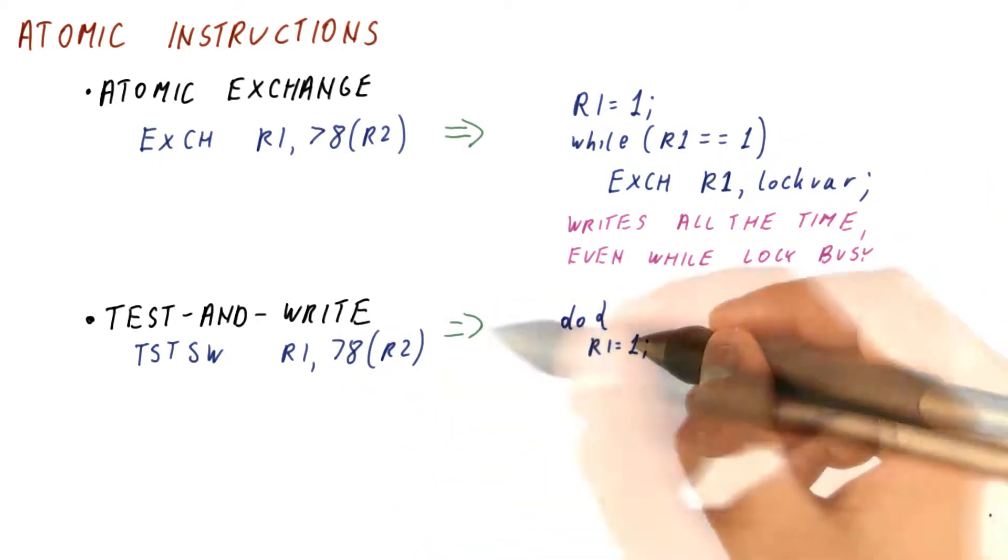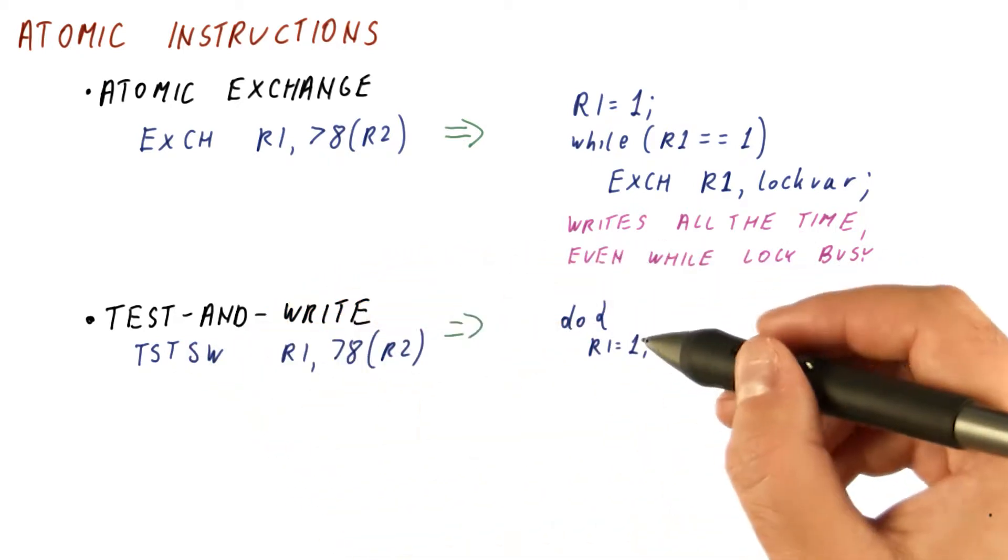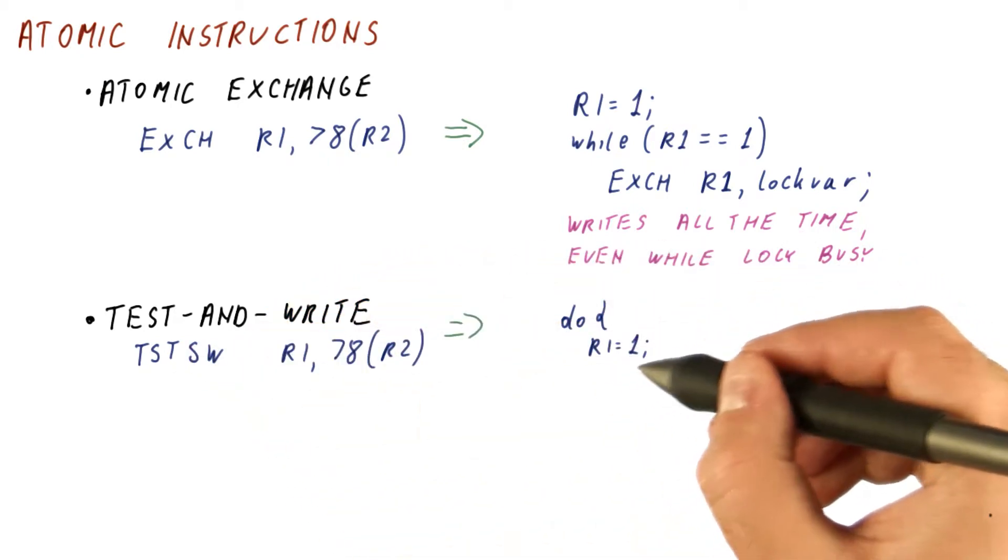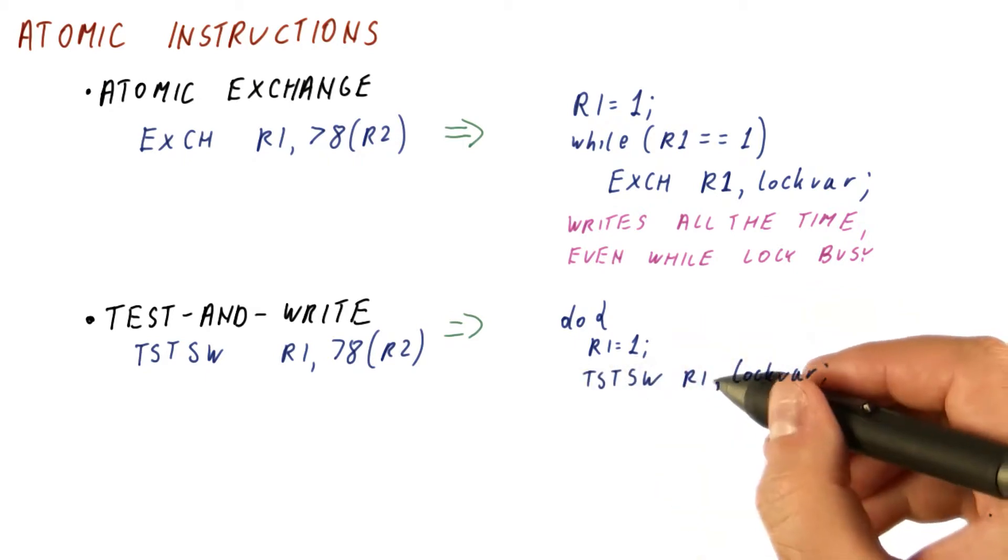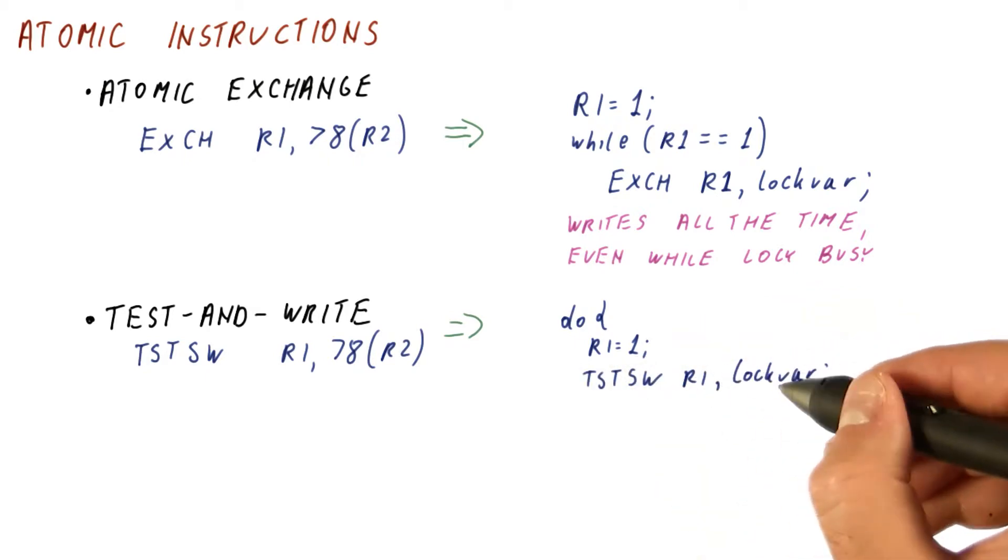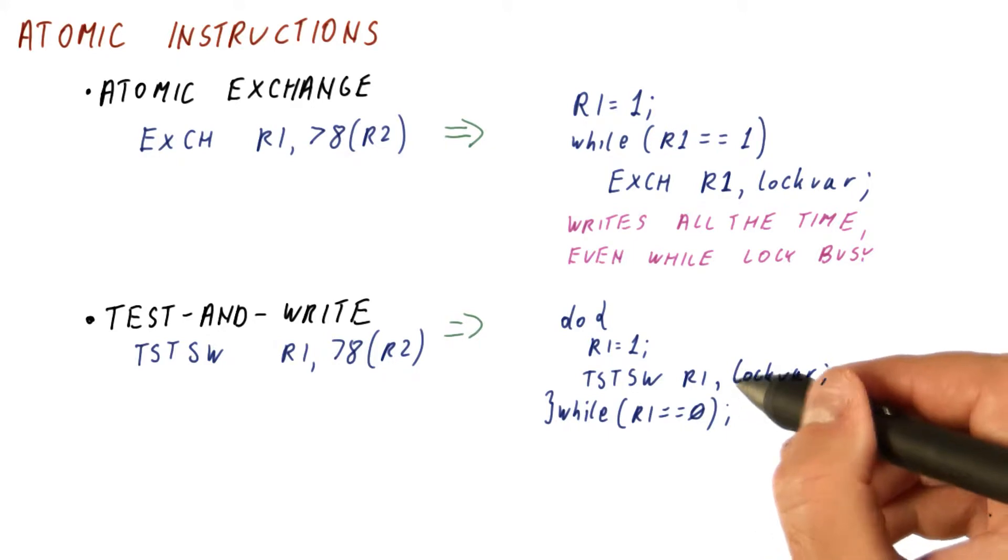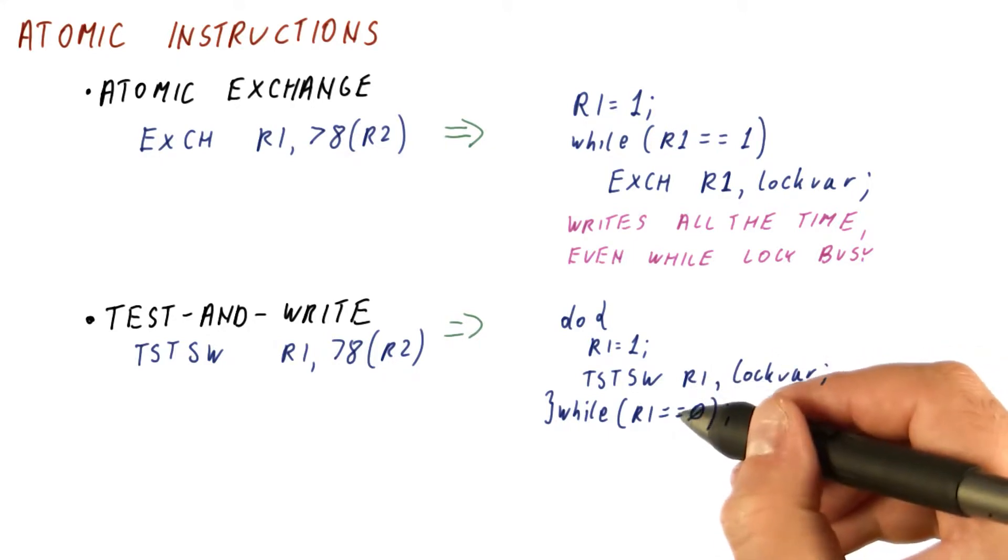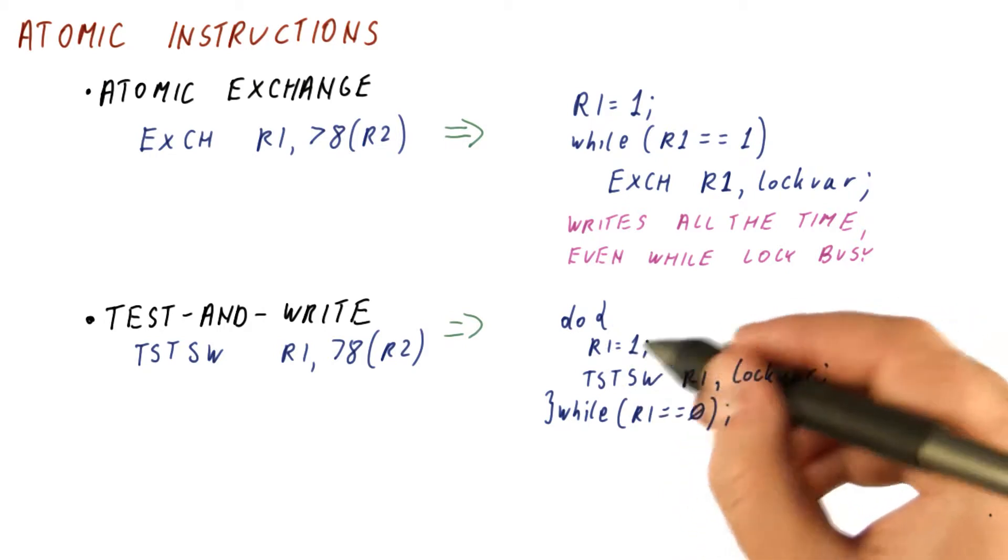We might implement a lock with a test and store instruction by setting R1 to 1, then testing lock var and storing R1 there. The result we get from this test and store, let's say zero in R1 means that the lock var was occupied, in which case we will just repeat this, try this again and again.